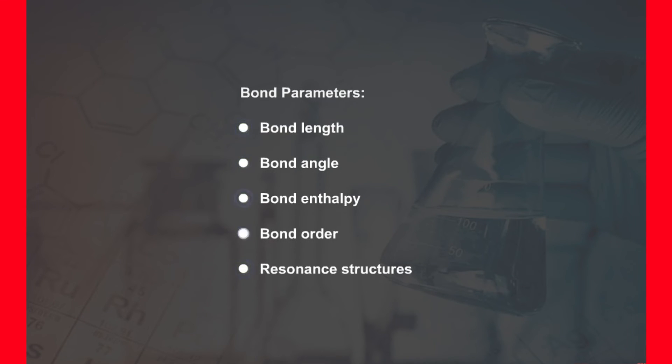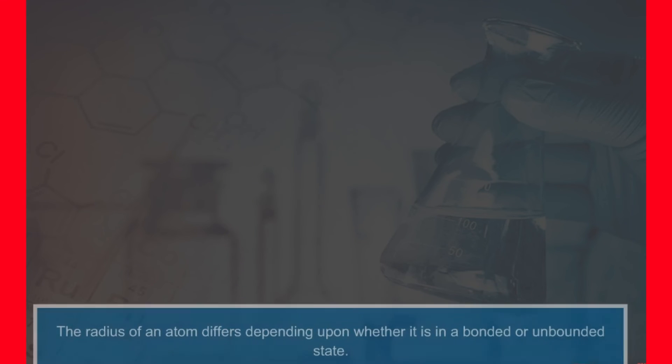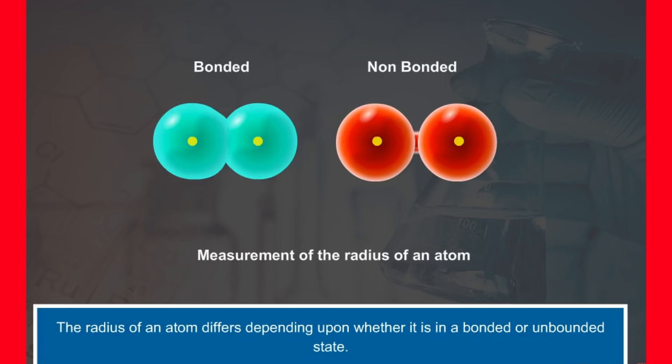Bond parameters: The covalent bonds are characterized by various parameters like bond length, bond angle, bond enthalpy, bond order, resonance structures and polarity of bonds. Let us discuss these parameters one by one. But before this, we should have an idea of atomic radius. The radius of an atom differs depending upon whether it is in a bonded or unbonded state.